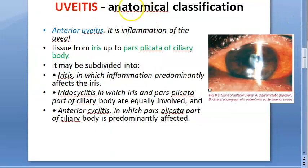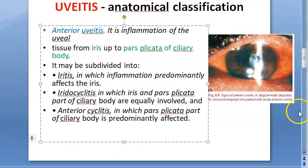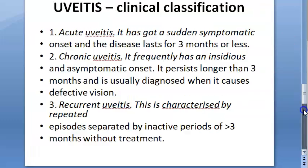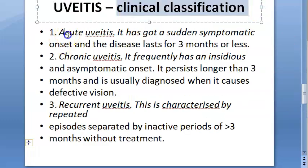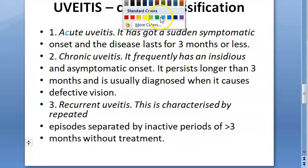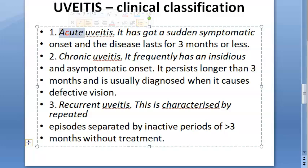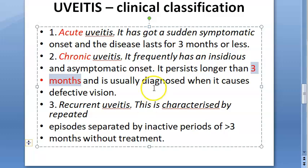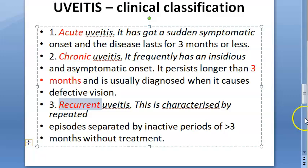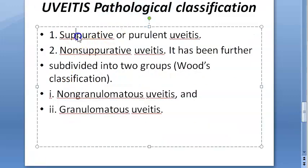We are done with anatomical classification — anterior, intermediate, and posterior. Now let us look at clinical classification. You have acute (sudden onset), chronic (lasting more than three months — three months is the cutoff used for uveitis), and recurrent uveitis, which involves repeated episodes separated by inactive periods.